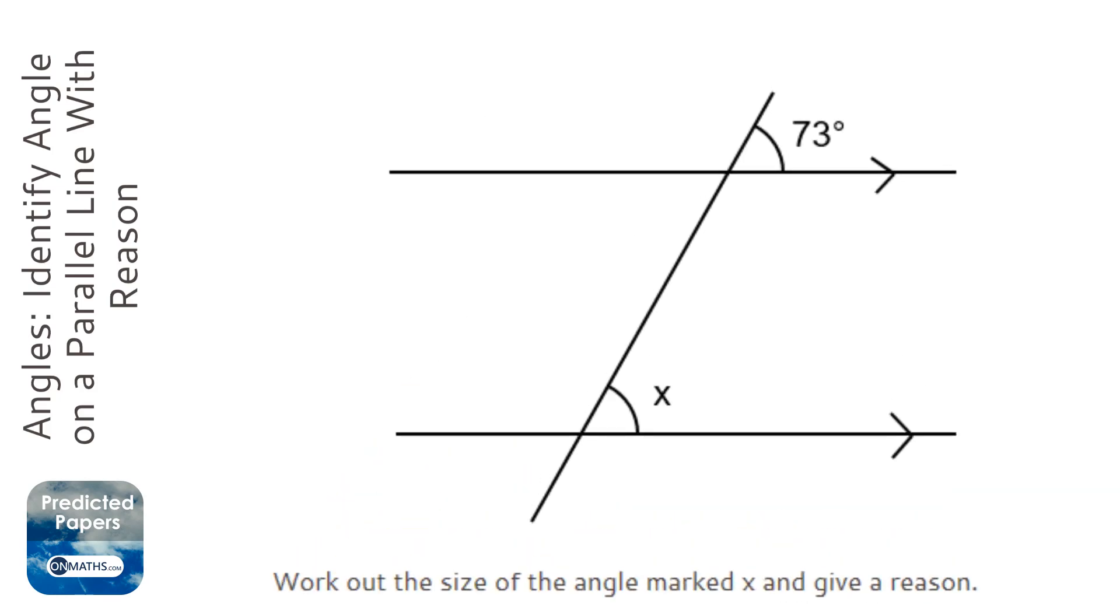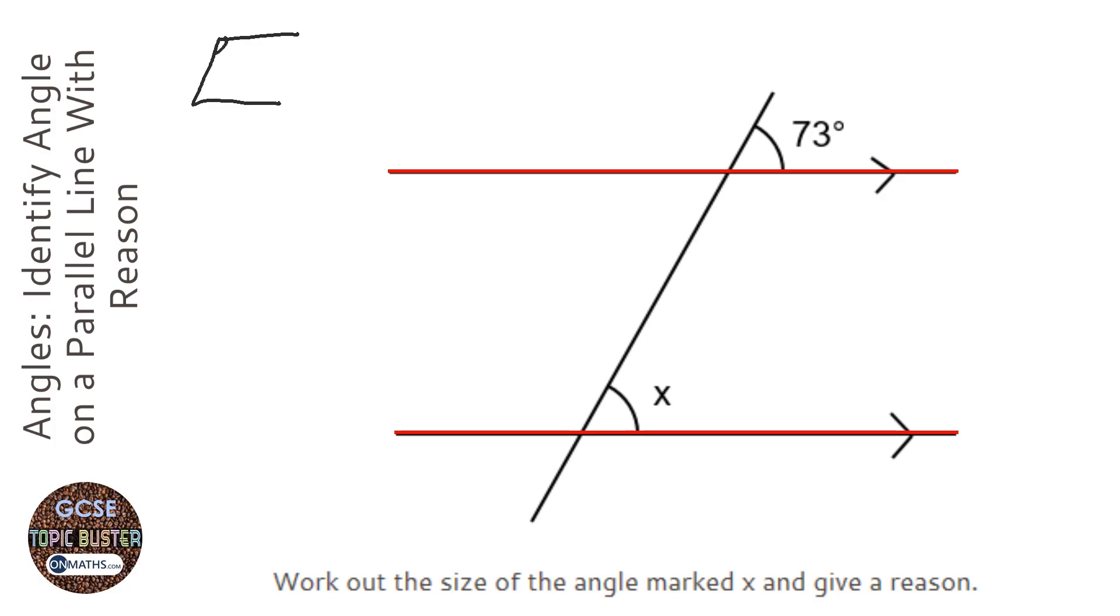We're given a pair of parallel lines in the question, these two here, and we've got three options of angles inside parallel lines. We have the C angles which are interior, and they add together to make 180.